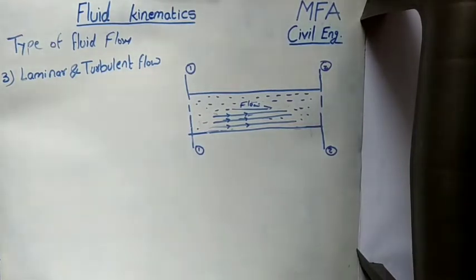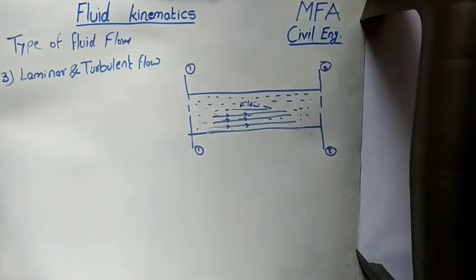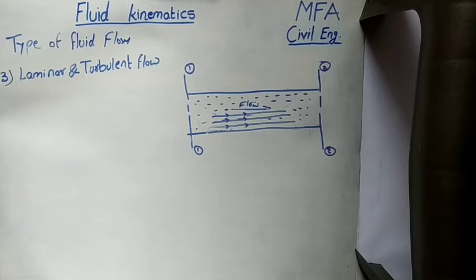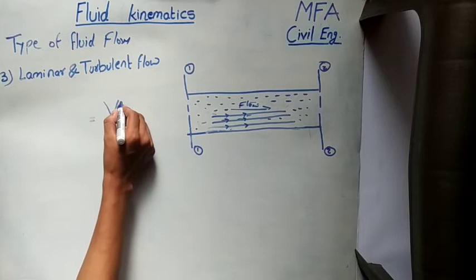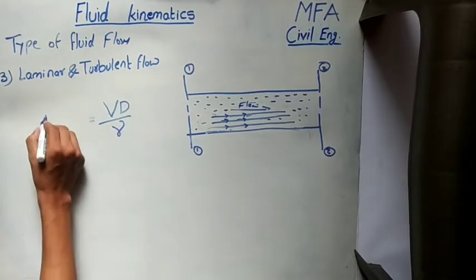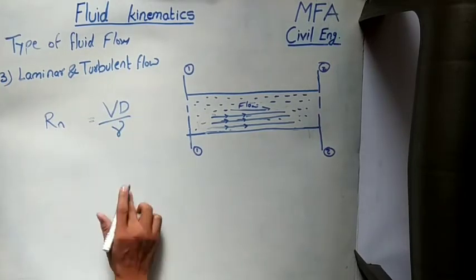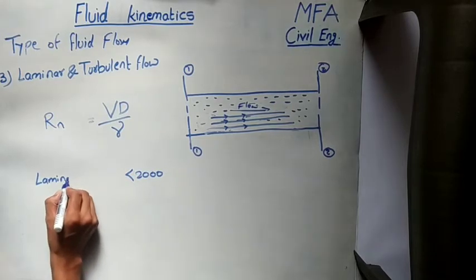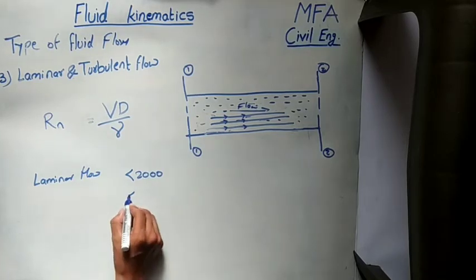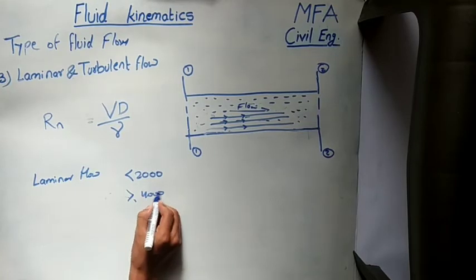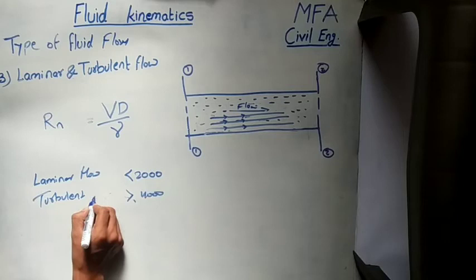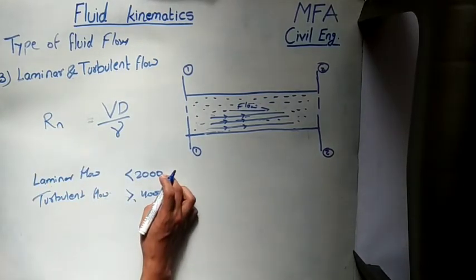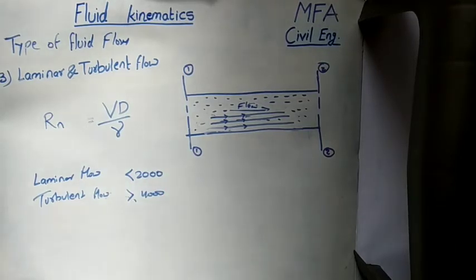Now, turbulent flow. When particles do not move along a well-defined path, that type of flow is called turbulent flow. Turbulent flow can also be defined as fluid flowing in a zigzag path. In the case of a pipe, laminar and turbulent flow can be determined by a dimensionless quantity called the Reynolds number, which equals velocity times diameter of pipe divided by kinematic viscosity. When the Reynolds number is less than 2000, the flow is laminar. When the Reynolds number is greater than 4000, the flow is turbulent. When the Reynolds number lies between 2000 and 4000, the flow may be either laminar or turbulent.